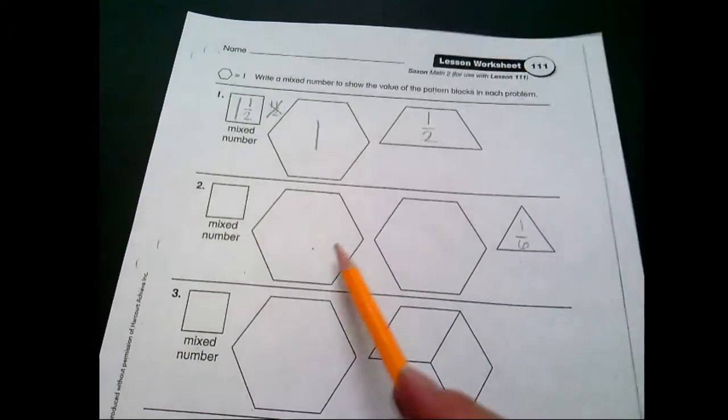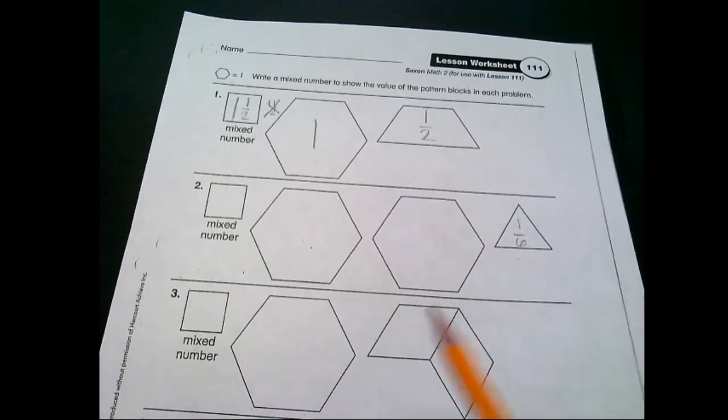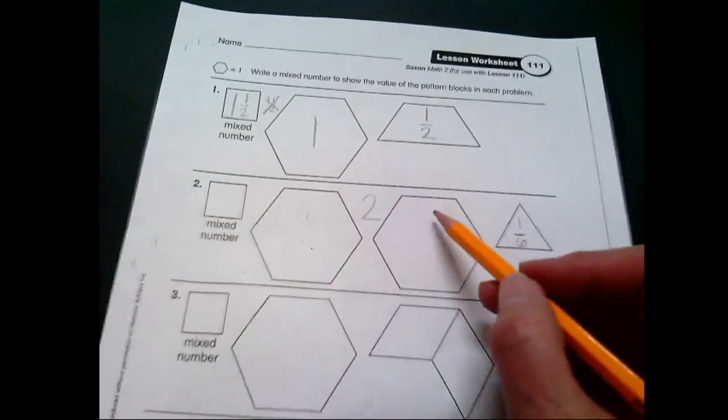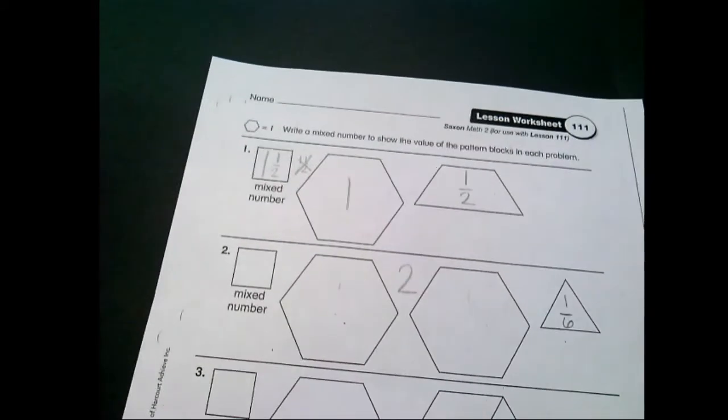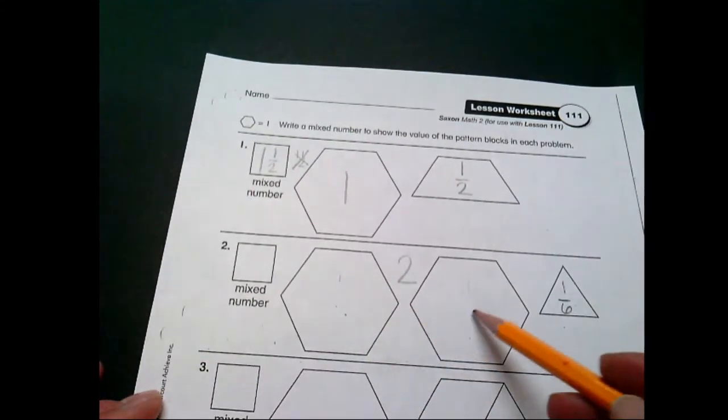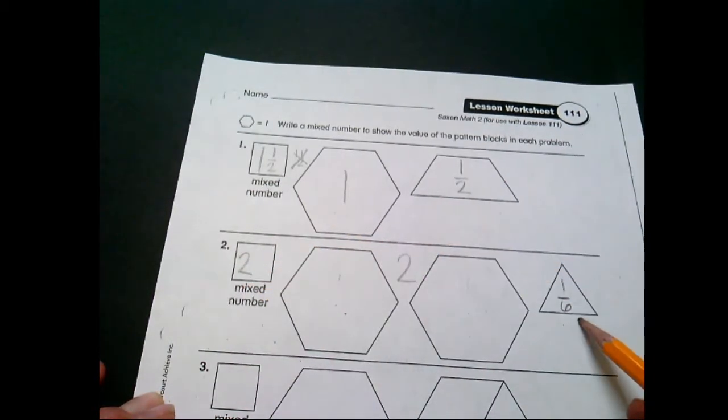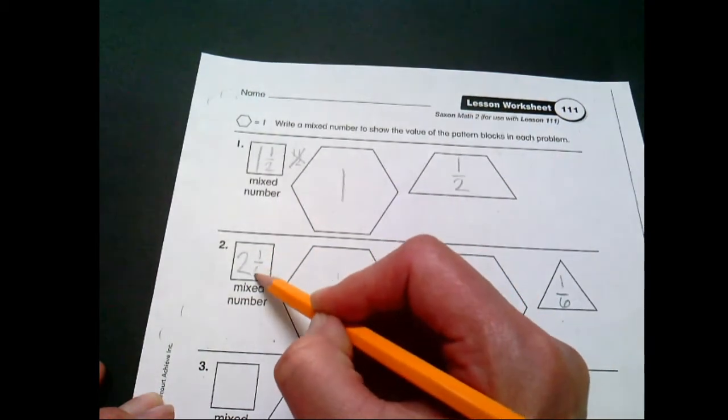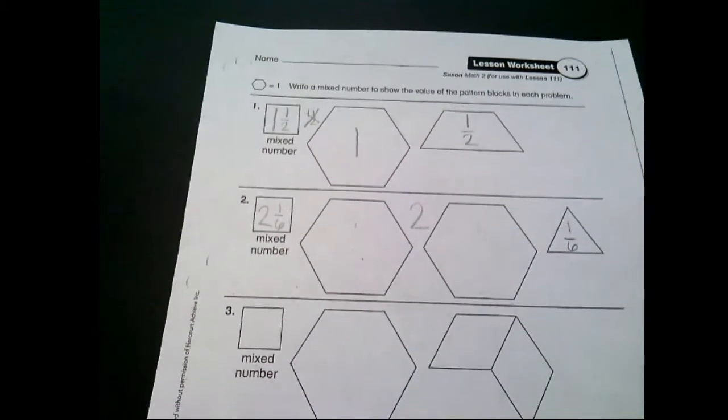So that means this is going to be what fraction? One sixth. All right, I'm going to move those off to the side. How many hexagons do we have? We have two all together, right? This is one, this is another one, so that's two all together. So how will we write our mixed number? The total number of whole pieces we have, that's a two. And then what's our fraction? Two and one sixth. And this is a spot where you use that word 'and.' Two and one sixth.